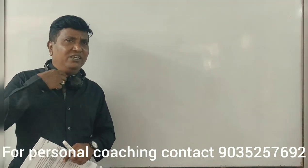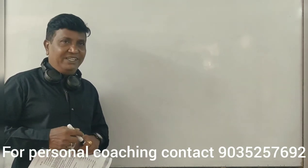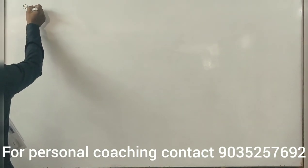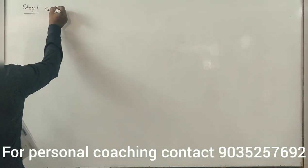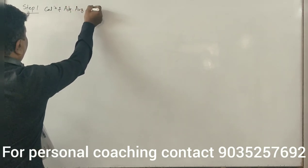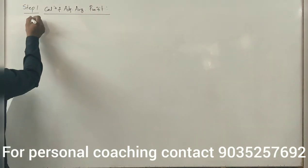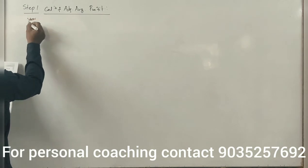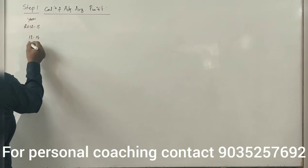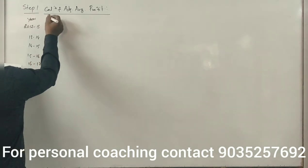The solution begins with calculating the balance sheet. Step number 1 is to calculate adjusted average profit. The years are 2012-13, 2013-14, 2014-15, 2015-16, and 2016-17 — that is 5 years.